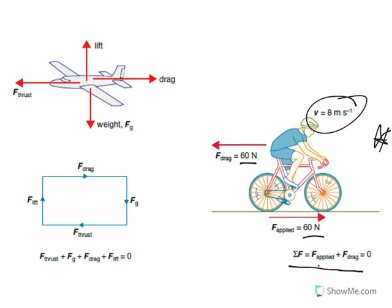The diagram on the left shows a plane with four forces: gravity pulling it down, lift in the opposite direction holding it up, engine thrust pushing it forward, and drag. When all four are balanced, the plane will fly level — altitude won't change — and it will be at constant velocity.